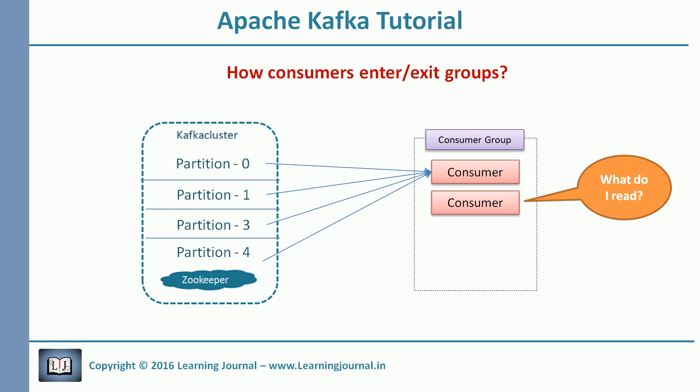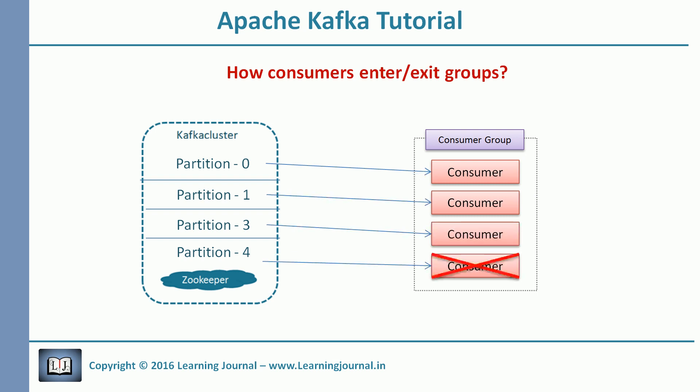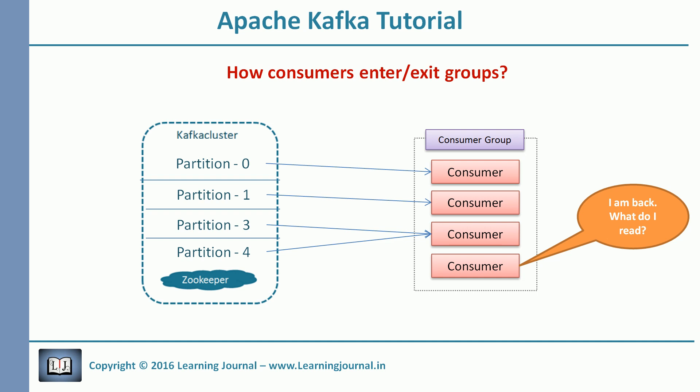This reassignment problem doesn't end there. Assume you have four consumers, but one crashed — so you are left with three. What should happen to that partition? Who should read it now? After some time, the crashed consumer has recovered, so again you have four of them, and a reassignment will be required once again. In a real distributed application, consumers keep joining and exiting and we don't have control over that. So my question is: how does Kafka handle it? When a consumer joins a group, how is a partition assigned to it? And what happens to a partition when a consumer leaves the group? Who manages all of this?